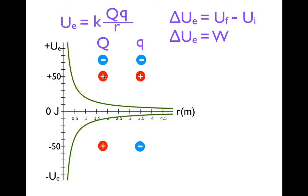When are we going to have a positive answer? If we're multiplying two charges using our signs, it will occur if we have two positives — positive times positive is positive. And if you have a negative times a negative, that's also positive. So if you have two like charges — two positives or two negatives — you're going to have positive potential energy. And as they get closer together, their positive potential energy increases; it gets more positive.